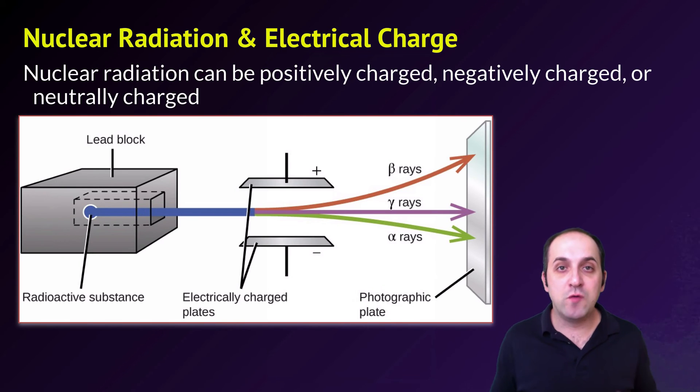When we consider different forms of nuclear radiation, there are ways to describe them. One of the major ways that we like to think about it is by thinking about the electrical charge of that nuclear radiation. So nuclear radiation can be positively charged, it can be negatively charged, or it can be neutrally charged. What this graphic is showing you is the passing of a source of different kinds of radiation through a series of electrically charged plates. And you can see that the beta rays are attracted towards the positively charged plate. The alpha rays are attracted towards the negatively charged plate. That's because the beta rays are negatively charged and the alpha rays are positively charged. Gamma rays are not attracted to either. And that's because they are neutrally charged.